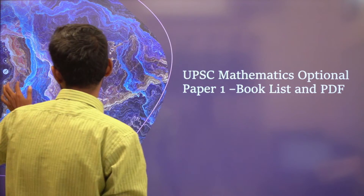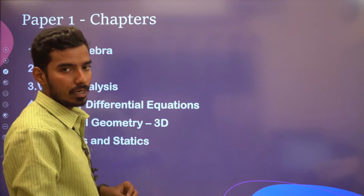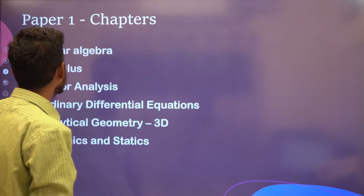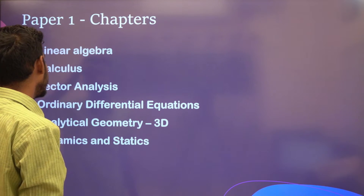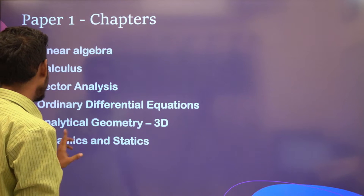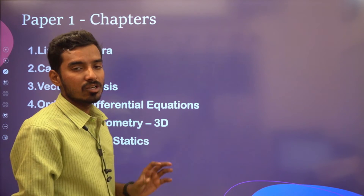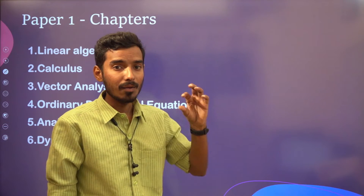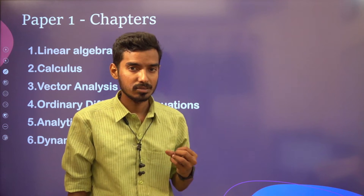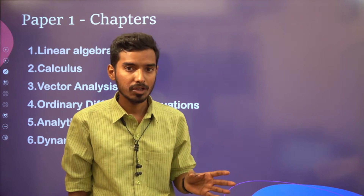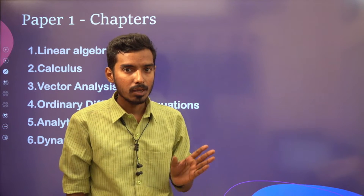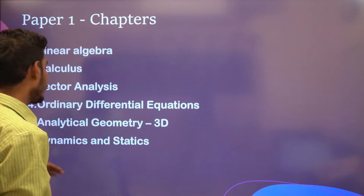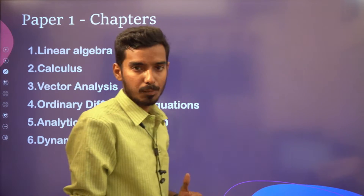First, we will list down the chapters that are in Paper 1. There are 6 chapters: Linear Algebra, Calculus, Vector Analysis, ODE, Analytical Geometry, and Dynamics and Statics. If you are following my YouTube channel and Anacademy videos, I have already completed all these chapters — all are free. I'll tell you how to cover all 6 chapters in Paper 1.